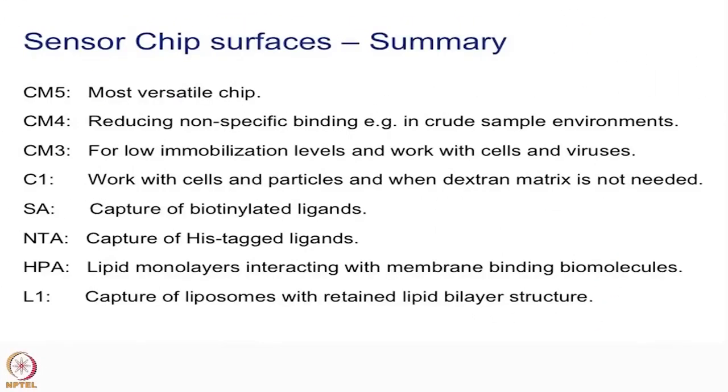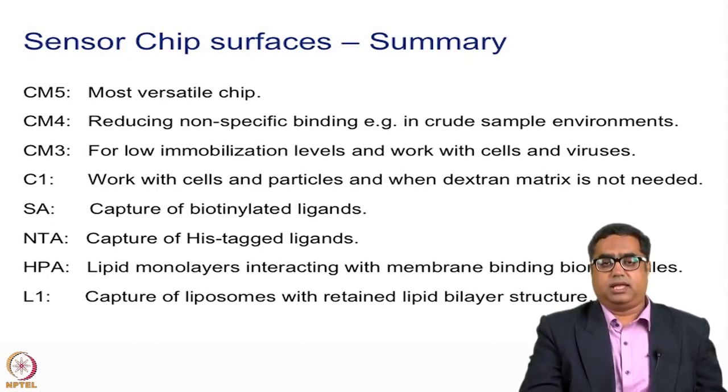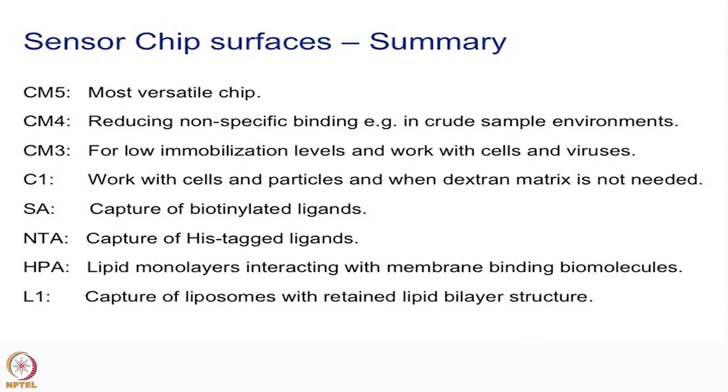In summary, the different chips available are CM5, CM4, CM3, C1, SA, NTA, HPA, and L1. It is very important to identify the functional groups present on your ligand and how well you can immobilize your molecule on the different variety of chips. With an understanding of the various chips and chemistries available, you will be able to identify whether to go for covalent coupling or a capture method, and to select the right chip for your experiments.